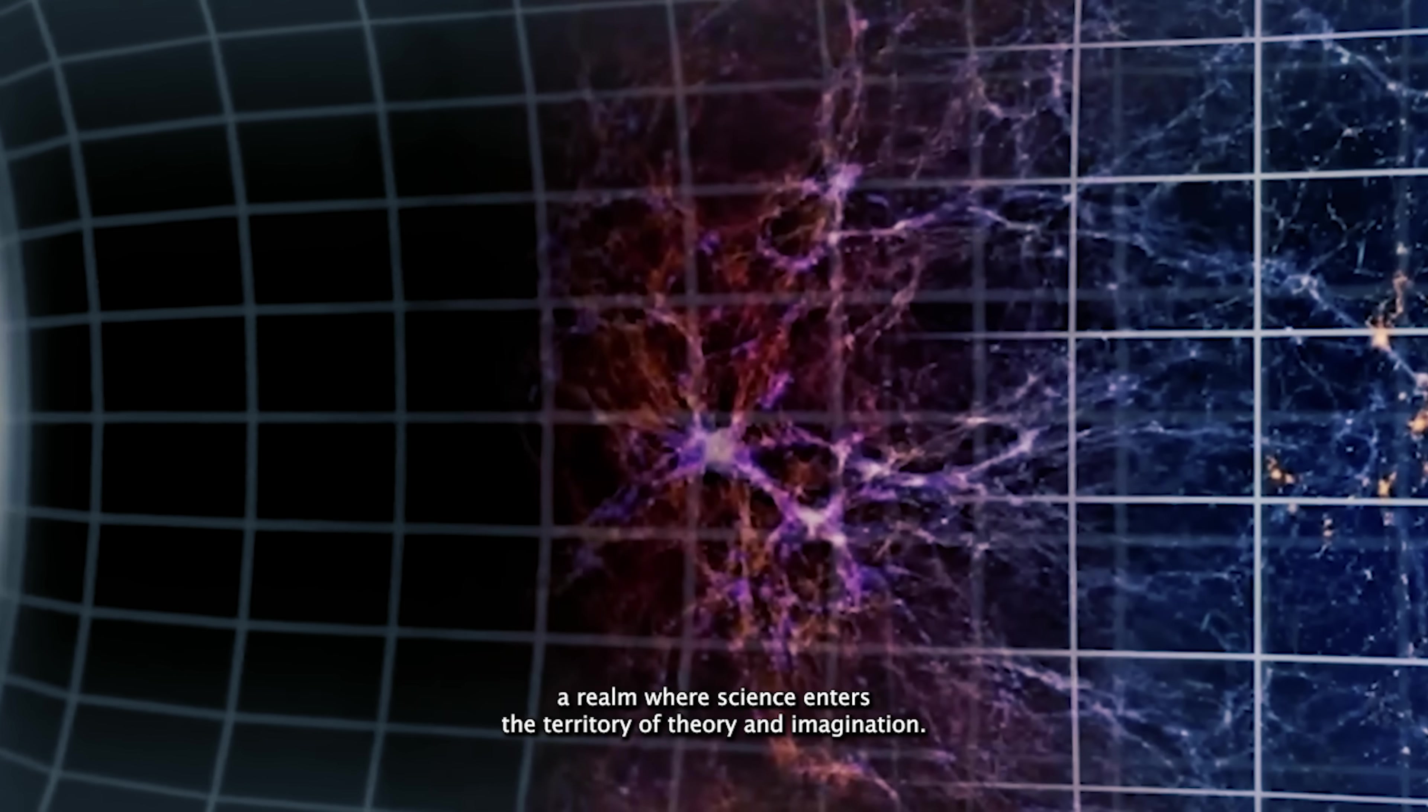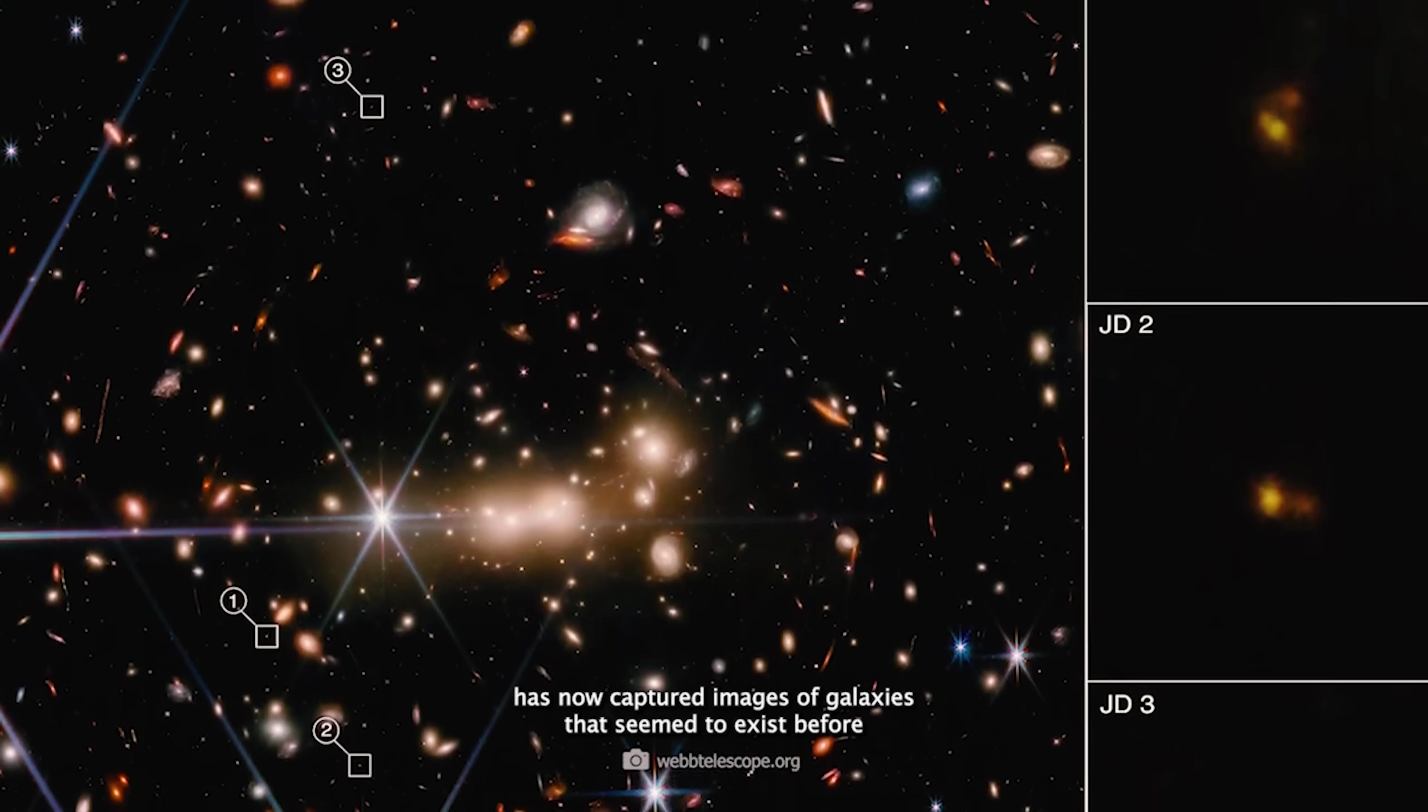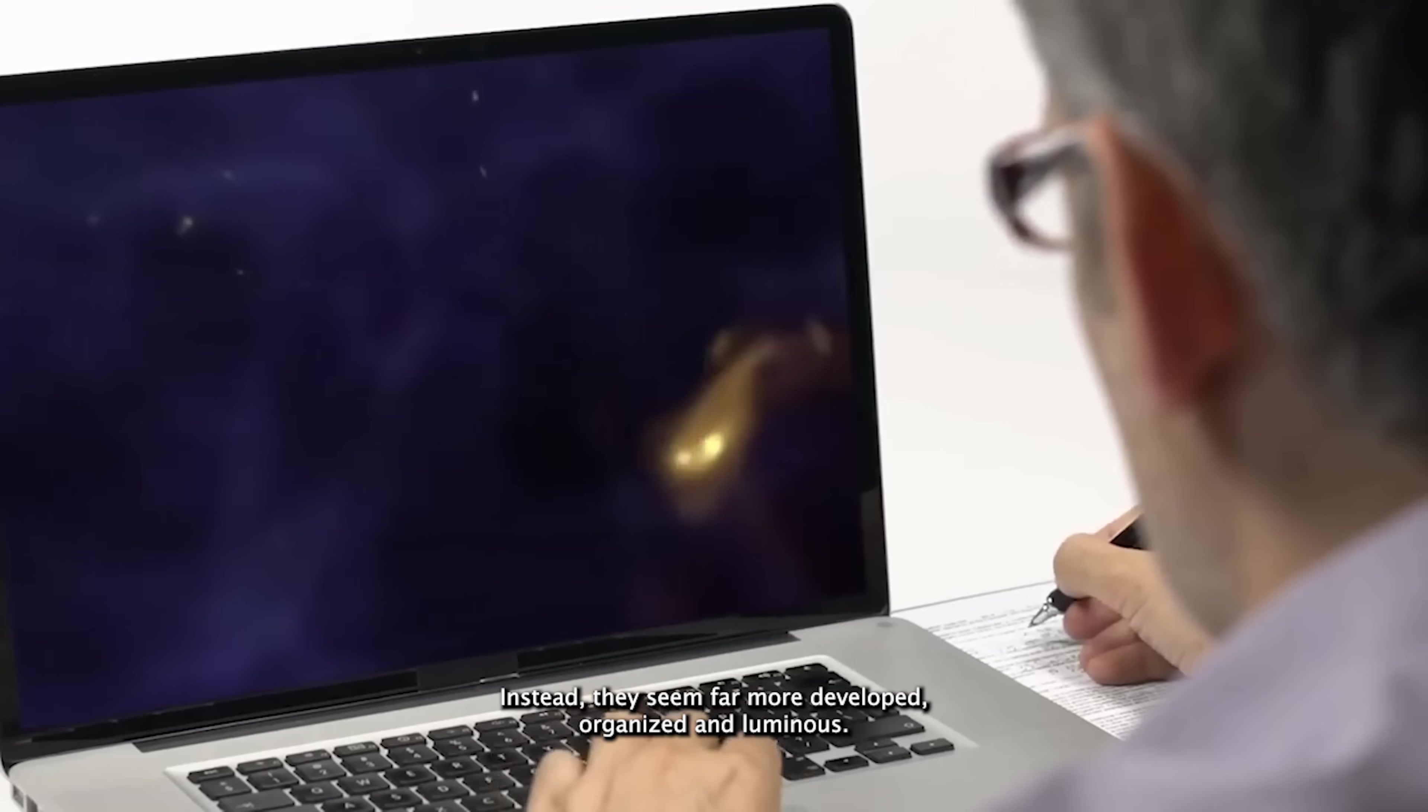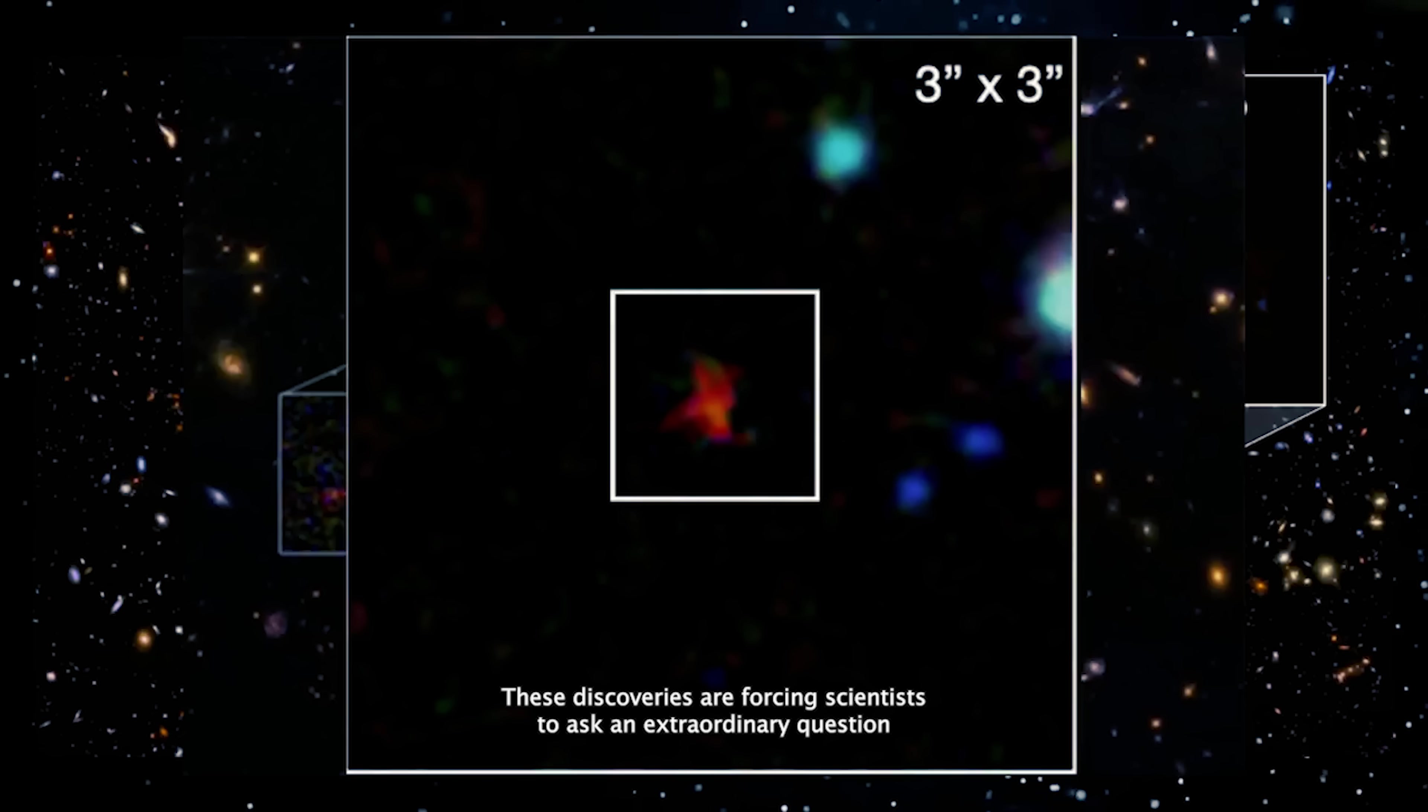But in a twist that's left scientists stunned, the Webb Telescope has now captured images of galaxies that seemed to exist before this mysterious dark age. That shouldn't be possible. And to make things even more puzzling, these galaxies don't resemble the primitive structures we expected from the early universe. Instead, they seem far more developed, organized, and luminous. Galactic anomalies in a timeline where they shouldn't yet exist.